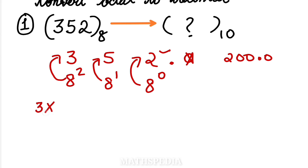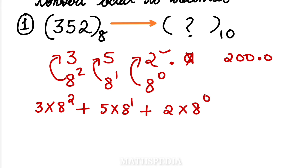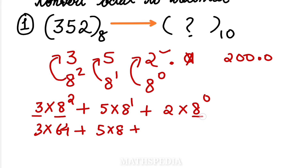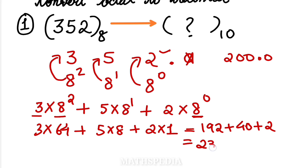Starting from the left: 3 × 8 power 2, plus 5 × 8 power 1, plus 2 × 8 power 0. 8 squared is 64, so 3 × 64 = 192. 5 × 8 = 40. 8 power 0 is 1, so 2 × 1 = 2. Total: 192 + 40 + 2 = 234. The answer is 234 in base 10.